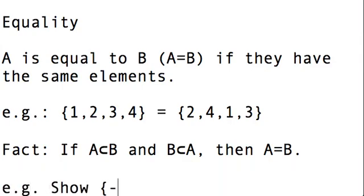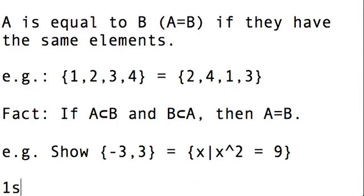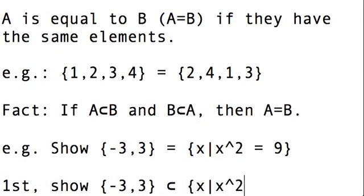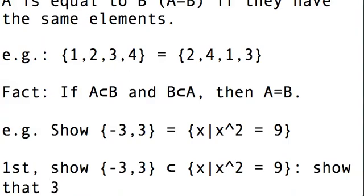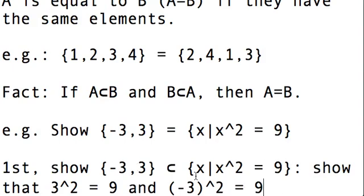So for example, let's show that {-3, 3} is equal to the set {X | X² = 9}. So first we'll show that {-3, 3} is a subset of {X | X² = 9}. Notice here we're starting with a roster on the left and a set builder on the right, and we have to compare these two. Well, to show that something in roster is inside of a set builder, we have to show that 3 squared is equal to 9, and negative 3 squared is equal to 9.